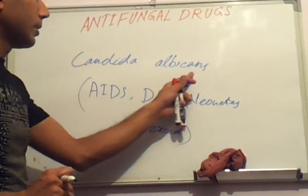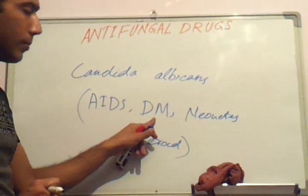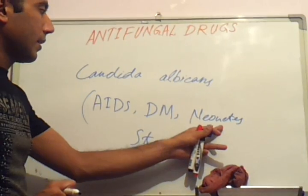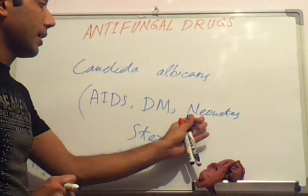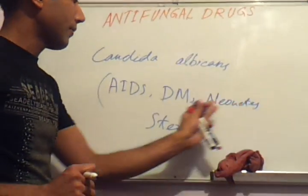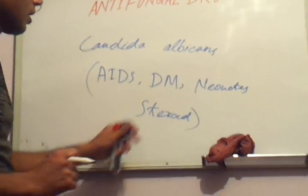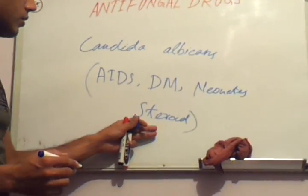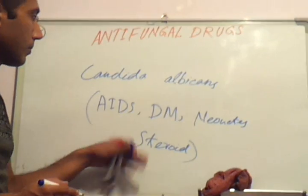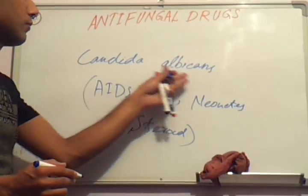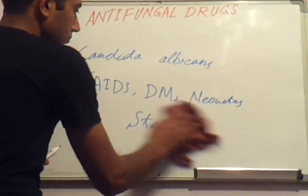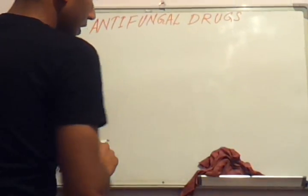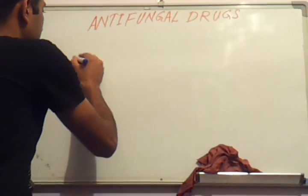In AIDS there is deficiency of T-helper lymphocytes, so the overall immune system fails and Candida albicans can cause infection. In diabetes mellitus, hyperglycemia impairs neutrophil and macrophage function, allowing fungal infection. In neonates, lymphocytes are immature and the lymphatic system is undeveloped. In patients using steroid drugs — which are immunosuppressants — Candida infection can occur in the vagina, oral cavity, or esophagus.